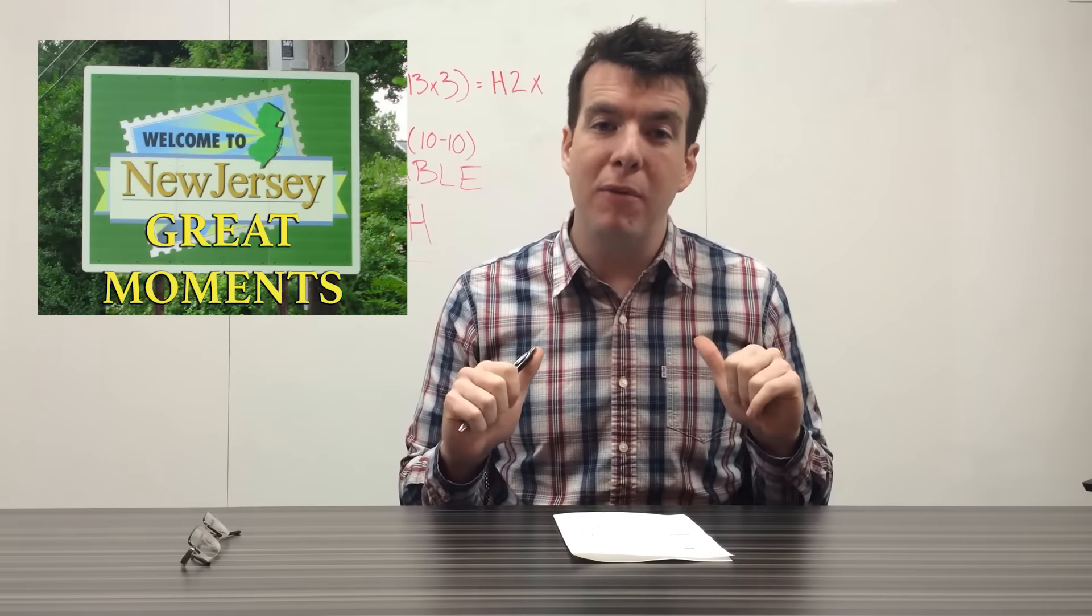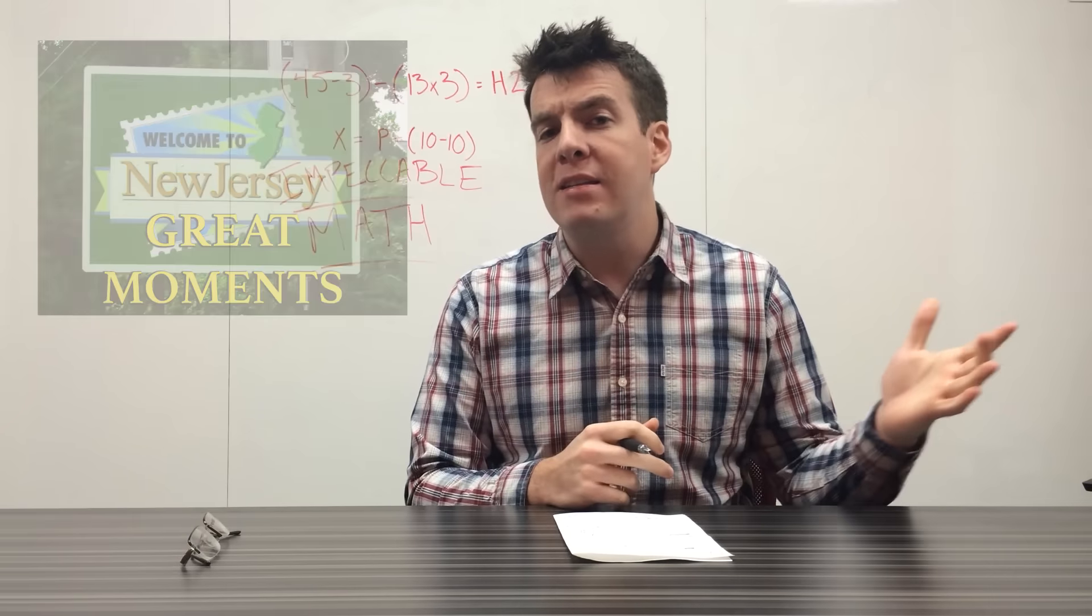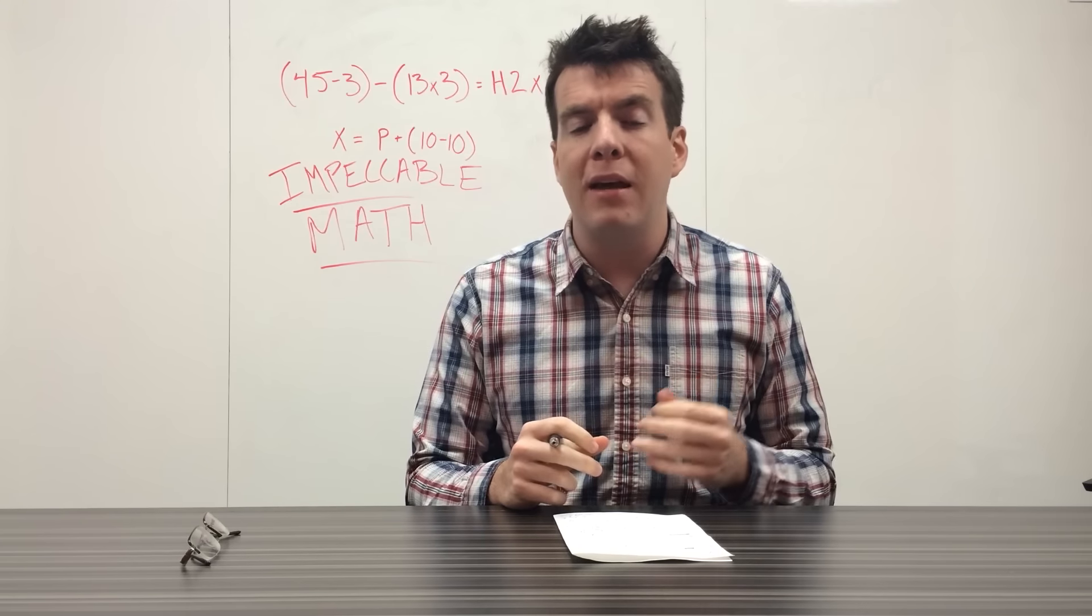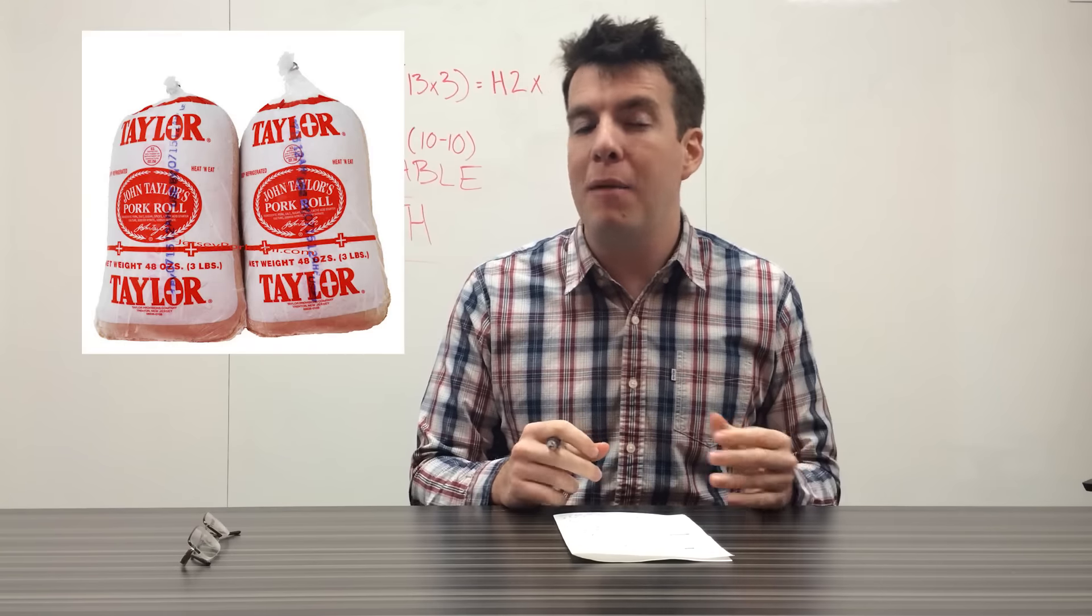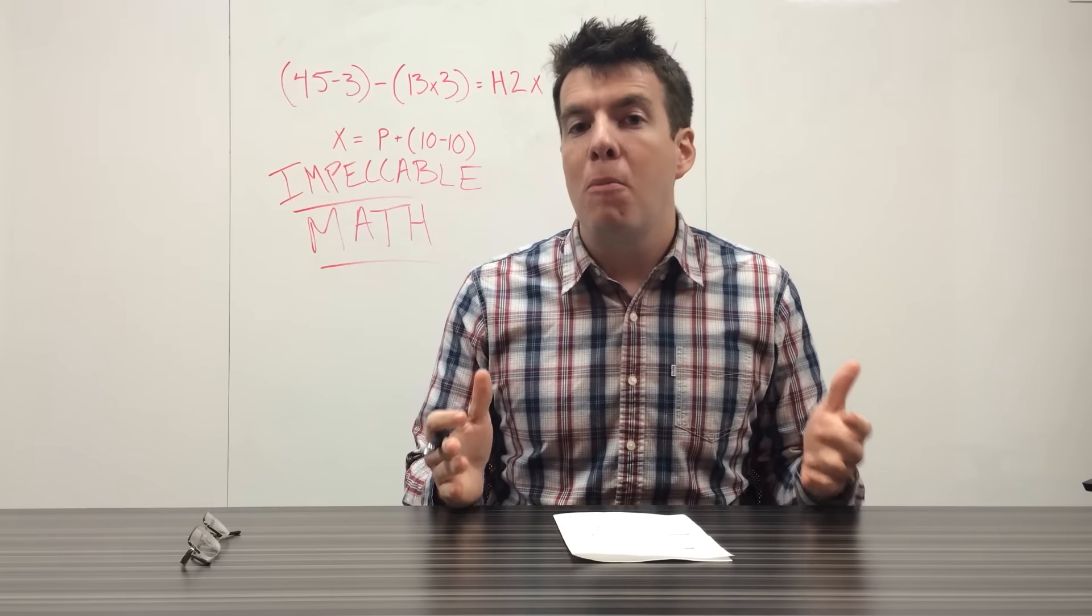This week's moment: in 1856, John Taylor developed and sold what he called Taylor Ham, a product that later on went on to be known as pork roll. What a moment! Anyway, Phillipsburg wins.